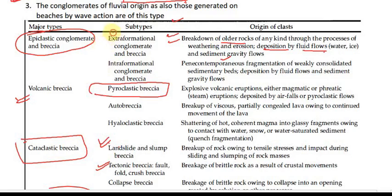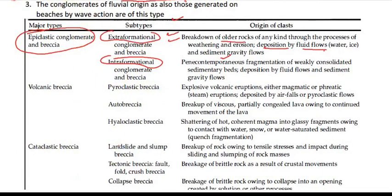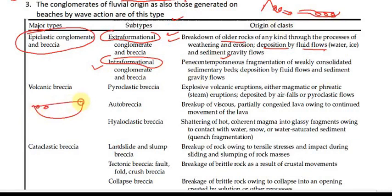Within epiclastic conglomerates, there are two subtypes: extra-formational and intra-formational. Extra-formational means deposition occurs in one place but the origin of the sediments is elsewhere — for example, a mountain weathers, rocks are transported, and deposited in a basin. Intra-formational means the origin and deposition are in the same place — breakdown and deposition occur within the same basin, with minimal transport. This is also called penecontemporaneous — meaning deposition occurs almost immediately after the activity.